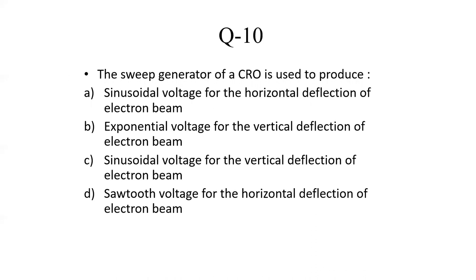The next question: the sweep generator of a CRO is used to produce: Option A — sinusoidal voltage for horizontal deflection of electron beam; Option B — exponential voltage for vertical deflection; Option C — sinusoidal voltage for vertical deflection; Option D — saw-tooth voltage for horizontal deflection of electron beam. The sweep generator of a CRO provides saw-tooth voltage. So the correct answer is Option D: saw-tooth voltage for the horizontal deflection of electron beam.